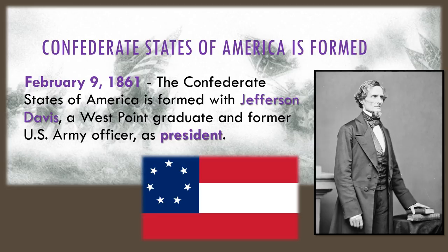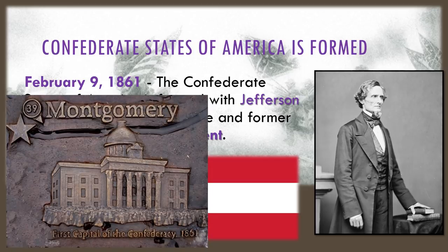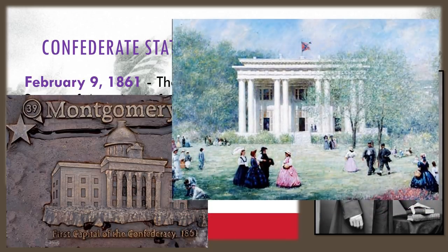Draw this flag next to your notes about the Confederates. They set up their government in Montgomery, Alabama, which was considered the first capital of the Confederacy. It is later moved to Richmond, but Virginia had not seceded yet, and the deep south of Mississippi had a population of overwhelming support for the Confederate cause at this time. The flag flying above the southern mansion is the Confederate States' battle flag, and we will see this flag throughout the war too.